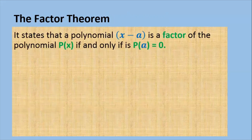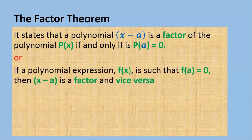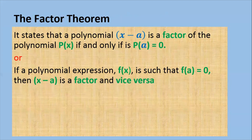Now we move to the factor theorem. The factor theorem states that x minus a is a factor of the polynomial p of x if and only if p of a equals 0. Another way to look at it: if a polynomial expression f of x is such that f of a equals 0, then x minus a is a factor, and vice versa. With the remainder theorem we said the remainder is p of a — here p of a equals 0, meaning we have no remainder. When you see in a question 'is a factor', it implies that p of a or f of a equals 0.